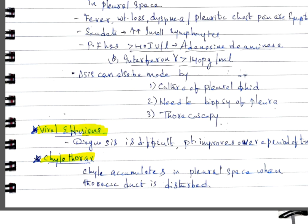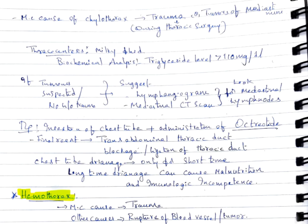Chylothorax: chyle accumulates in pleural space when thoracic duct is disturbed. Most common cause is trauma or tumors of mediastinum. During thoracoscopy or thoracocentesis, milky fluid is extracted. Biochemical analysis reveals triglyceride level more than 110 mg per deciliter. If tumors are suspected with no history of trauma, lymphangiogram or mediastinal CT scan is suggested to look for mediastinal lymph nodes.